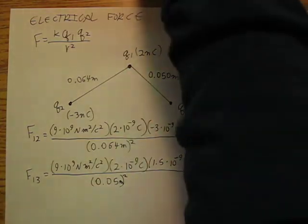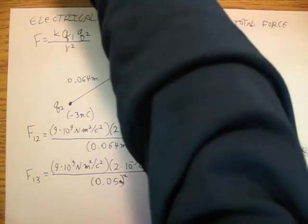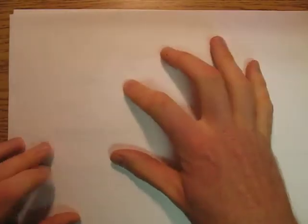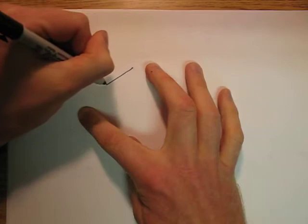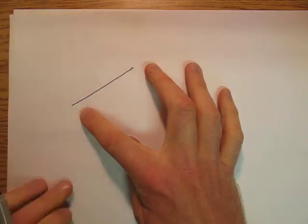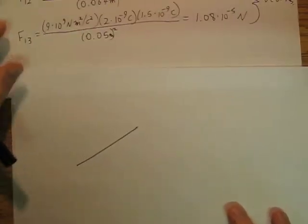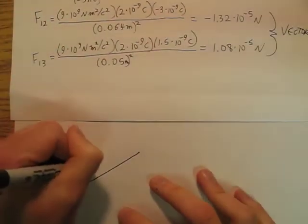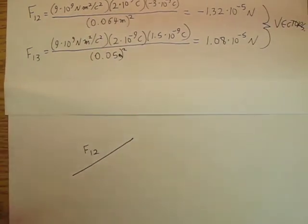And so what we have to do is we have to add them using vectors. So I'm going to take another sheet of paper here and copy down that line. I'm going to say this is my force F12. And I have to ask, is it attractive or repulsive?